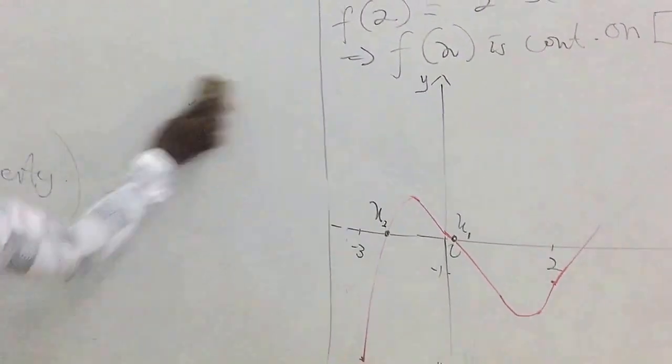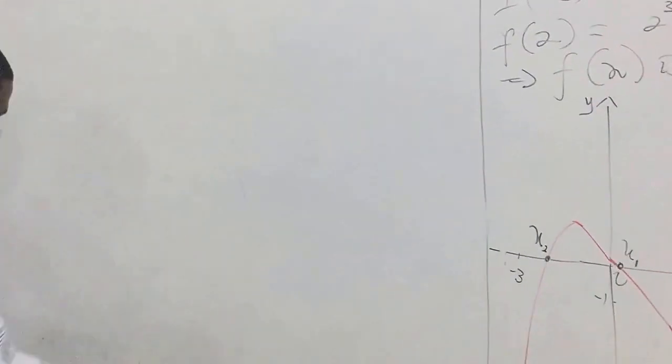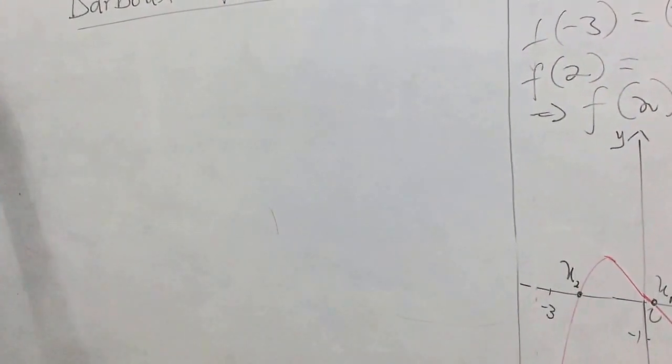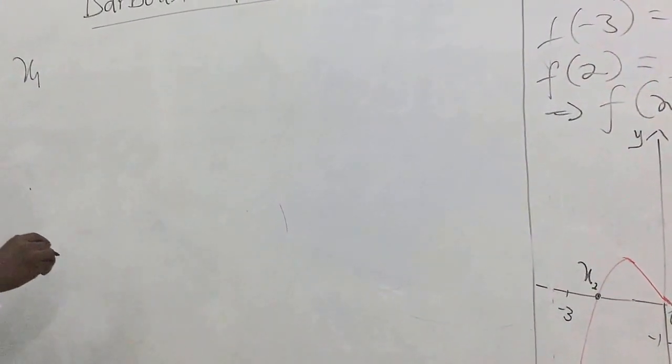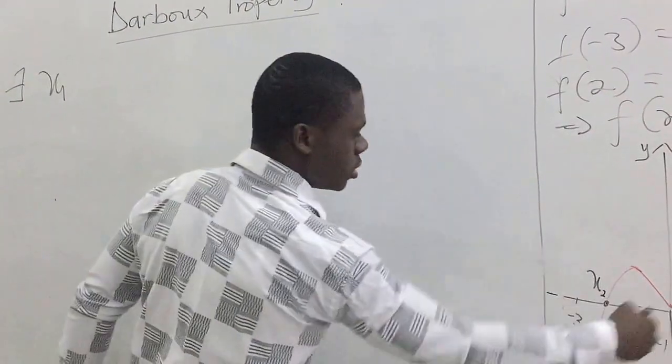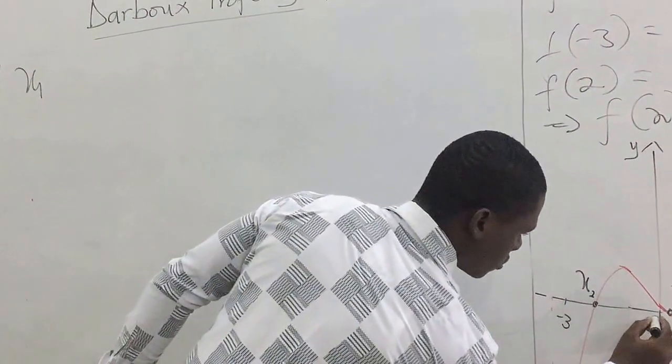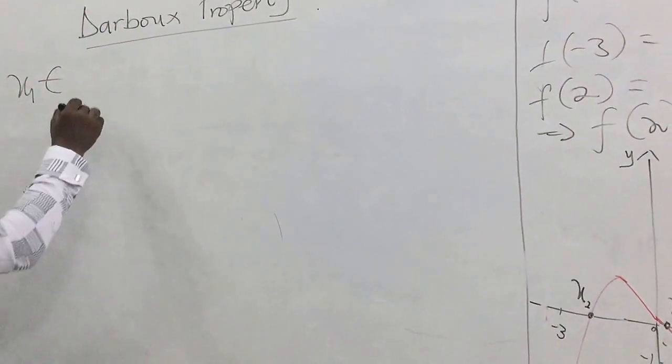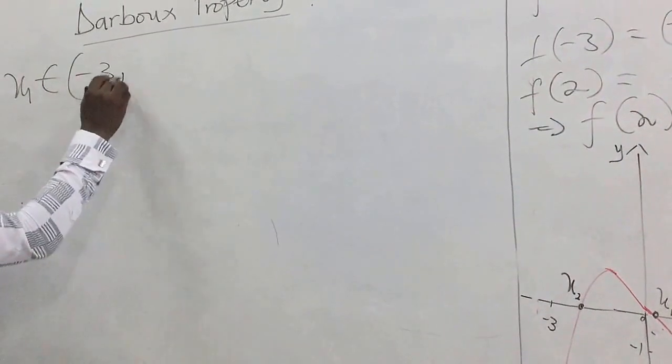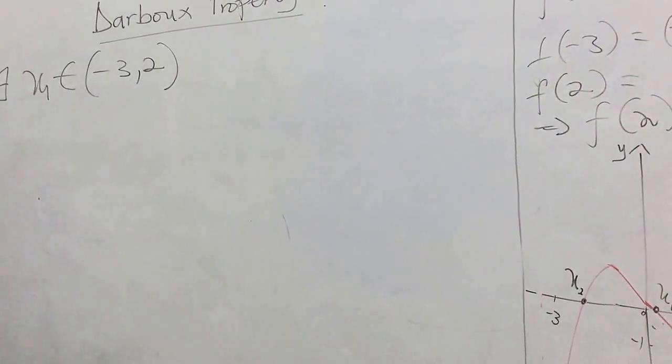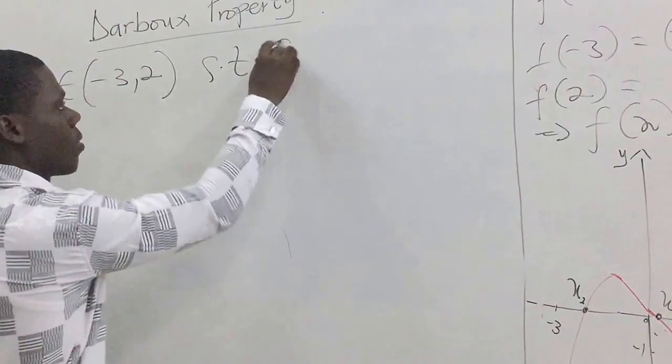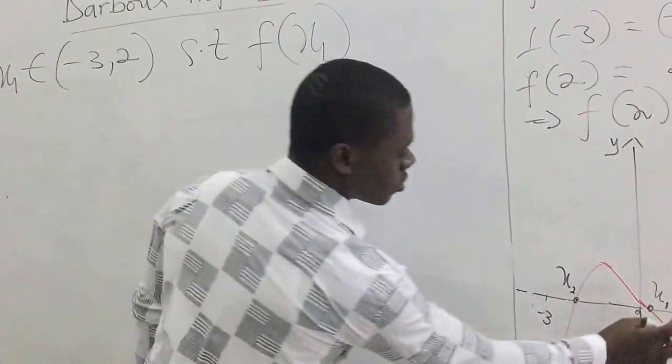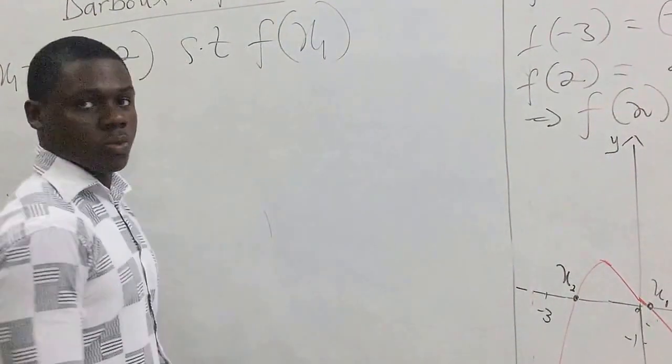This means that we can see, there is this x₁ within the interval. Remember, this is the origin. There is this x₁ within the open interval (-3, 2) such that f(x₁) = 0.